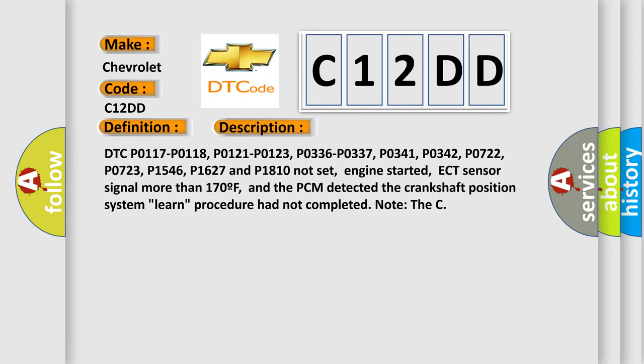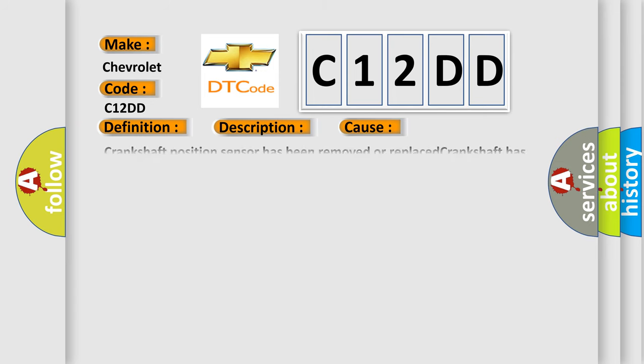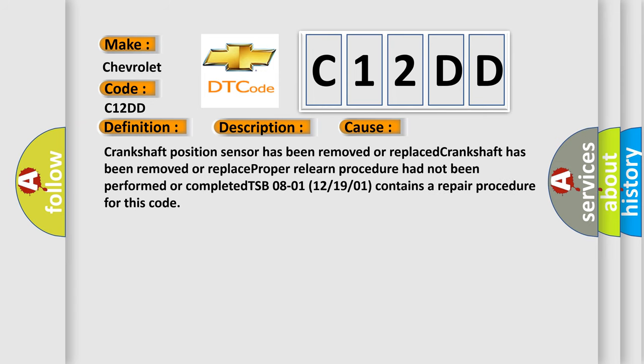This diagnostic error occurs most often in these cases: Crankshaft position sensor has been removed or replaced; Crankshaft has been removed or replaced; Properly learned procedure had not been performed or completed. TSP 08-01 12/19/01 contains a repair procedure for this code.